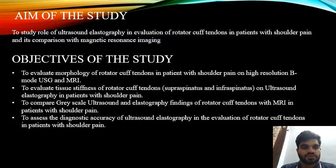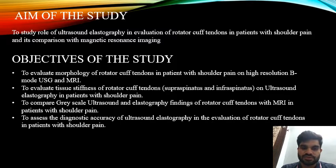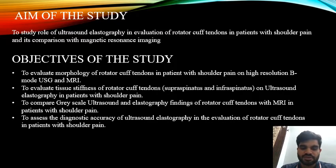Aim of the study: to study the role of ultrasound elastography in evaluation of rotator cuff tendons in patients with shoulder pain and its comparison with magnetic resonance imaging. Objectives: to evaluate morphology of rotator cuff tendons on high-resolution B-mode USG and MRI; to evaluate tissue stiffness of rotator cuff tendons — supraspinatus and infraspinatus — on ultrasound elastography; to compare grayscale ultrasound and elastography findings with MRI; and to assess the diagnostic accuracy of ultrasound elastography in evaluation of rotator cuff tendons in patients with shoulder pain.